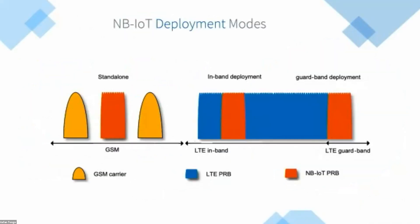NB-IoT can be deployed as standalone. For 2G networks, they can use a 200 kHz raster grid and deploy it as a standalone carrier, or they can deploy it in-band within the LTE band at 180 kHz, or in the guard band of the cellular network.